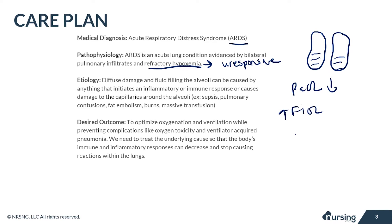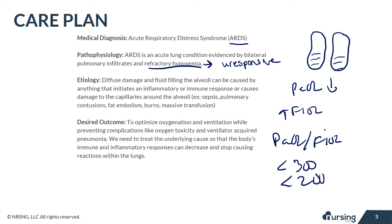This is measured with the PaO2/FiO2 ratio. If it's less than 300, it's mild. If it's less than 200, it's moderate. And if it's less than 100, it's severe.